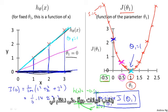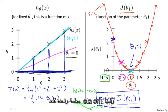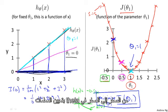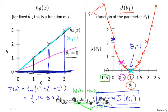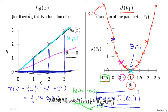To wrap up, in this video we looked at some plots to understand the cost function. To do so, we simplified the algorithm so that it had only one parameter theta one, and we set theta zero to 0. In the next video, we'll go back to the original problem formulation and look at some visualizations involving both theta zero and theta one, without setting theta zero to 0. Hopefully that will give you an even better sense of what the cost function J is doing in the original linear regression formulation.